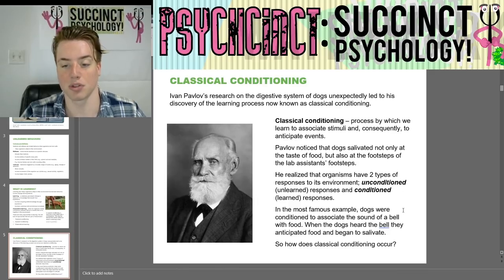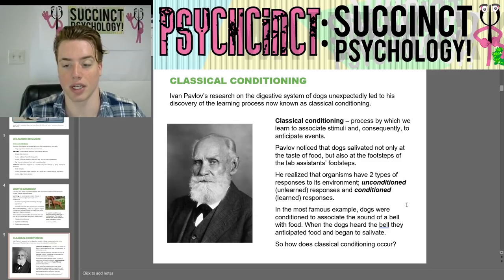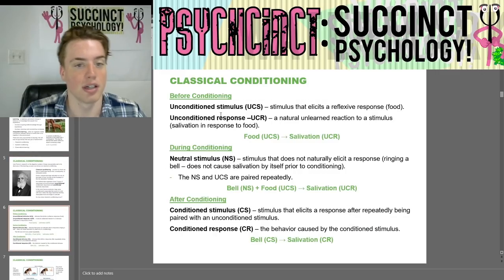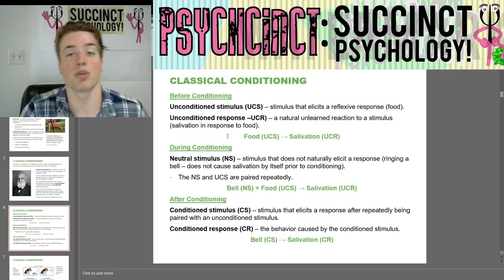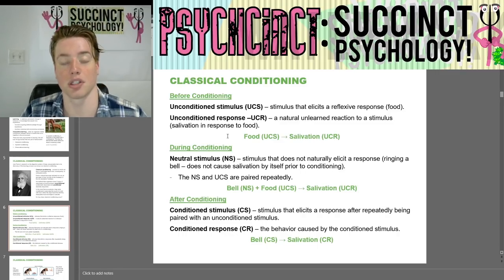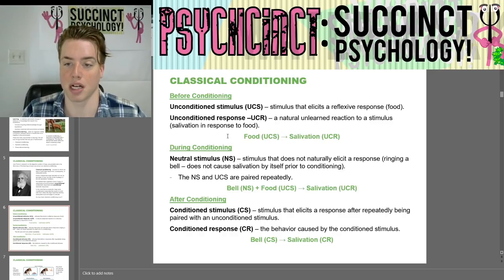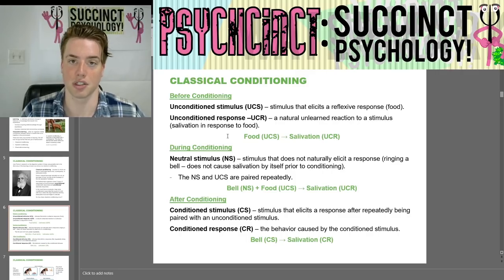In the most famous example, dogs were conditioned to associate the sound of a bell with food — when the dogs heard the bell, they anticipated food and began to salivate. Before conditioning, the unconditioned stimulus, or UCS, is a stimulus that elicits a reflexive response — in this case, food. The unconditioned response, or UCR, is a natural but unlearned reaction to that stimulus — salivation in response to food. Food, the UCS, leads to the unconditioned response of salivation.